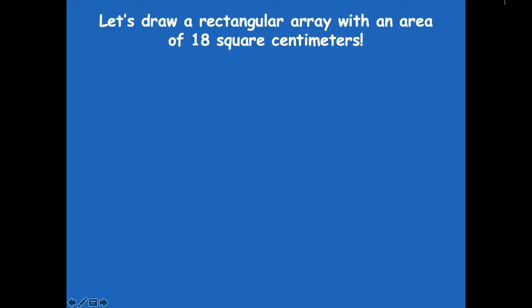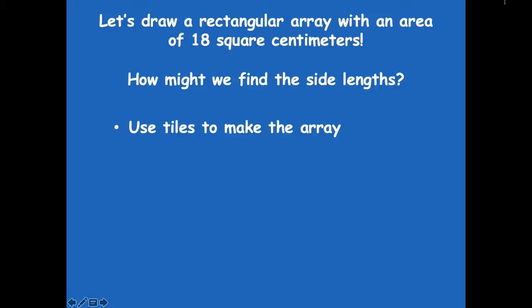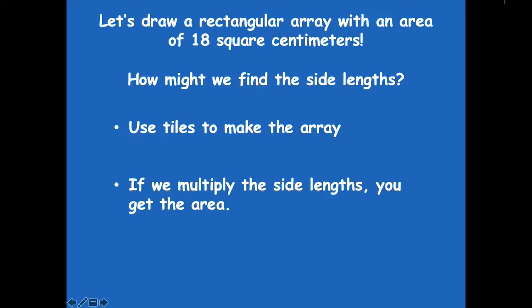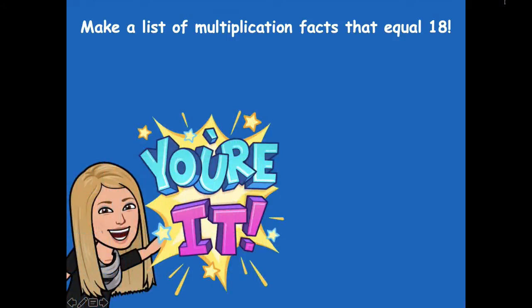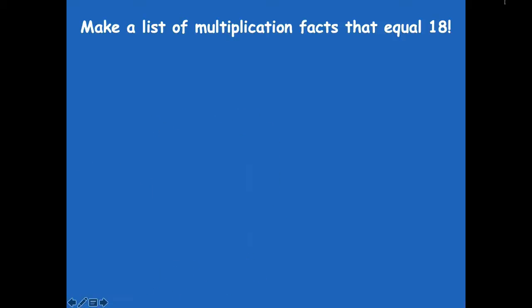Let's draw a rectangular array with an area of 12 square centimeters. How might we find the side lengths? We could use tiles to make an array that would have 18 tiles. If we multiply the side lengths, we get the area. So let's make a list of multiplication facts that equal 18. Pause the video, write that on your board, and then click play when you're ready. For example, one times 18 equals 18. What else could we come up with? What two factors can we multiply together to give us the area of 18? Pause the video, write down as many as you can think of, and click play when you're ready.